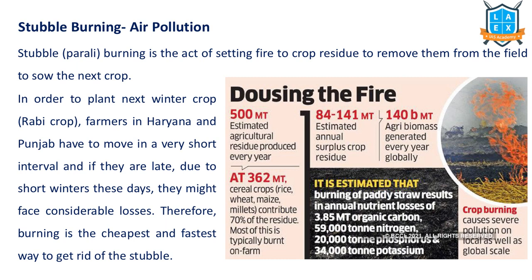Instead of understanding each type of pollution in detail here, we are going to discuss only the important points related to this topic. First is stubble burning, which leads to air pollution. Stubble burning means setting fire to crop residue. It leads to CO2, nitrous oxide, and other air pollutants including particulate matter. Especially in the northern Indian region, after the Kharif crop, farmers engage in stubble burning which leads to air pollution in the northern Indian plains.